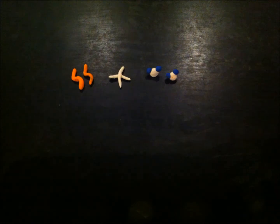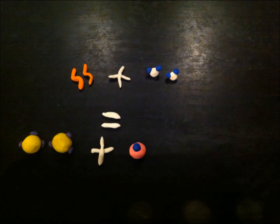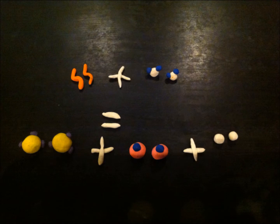General equation: light energy plus two water molecules produces ATP and NADPH and oxygen as a waste product. The ATP and NADPH molecules are then sent to the Calvin cycle.